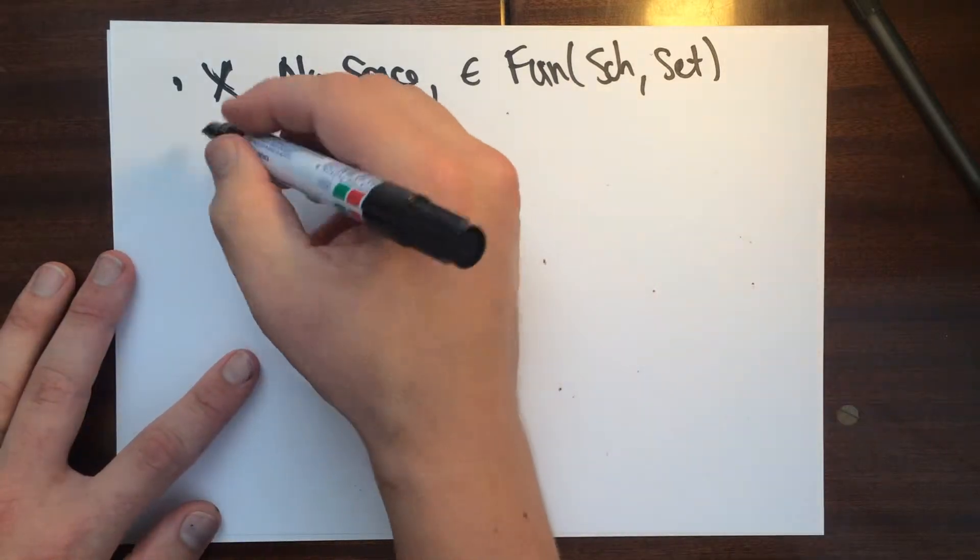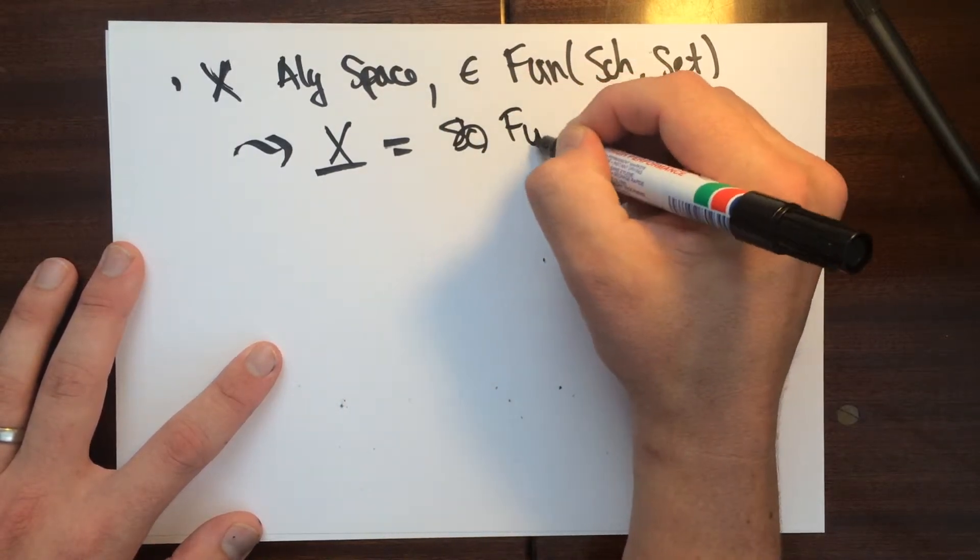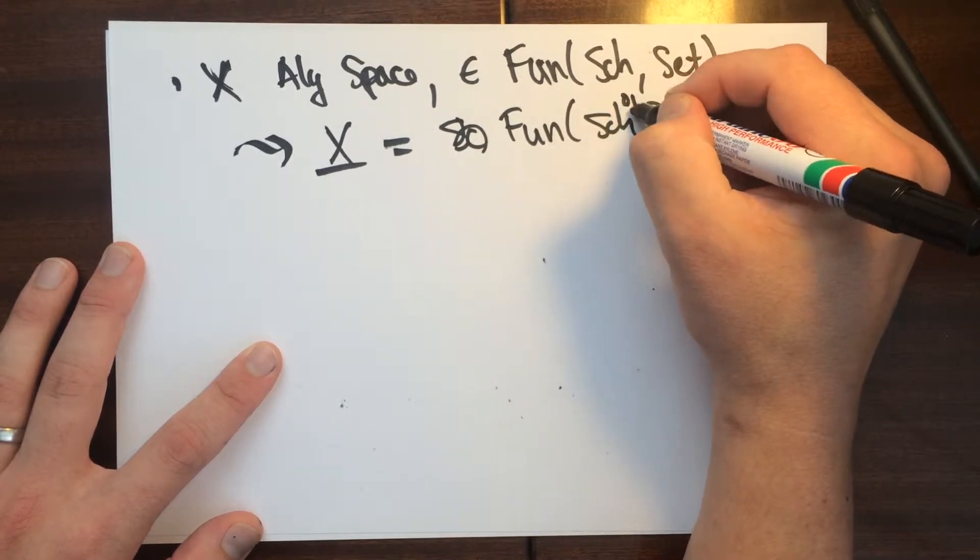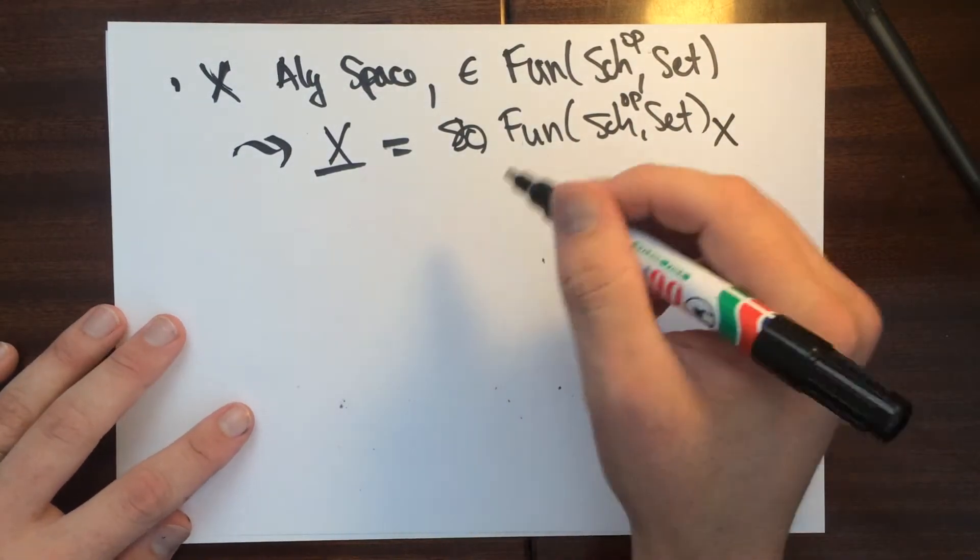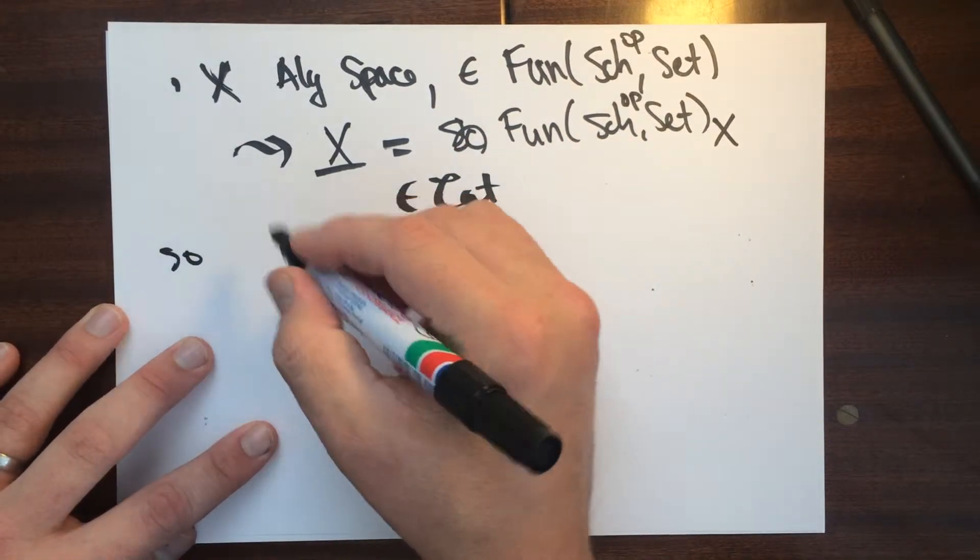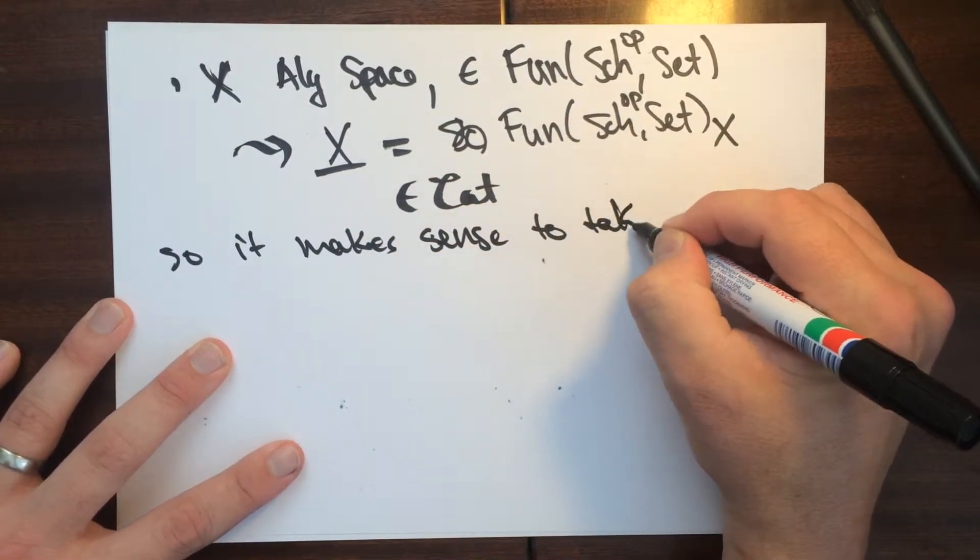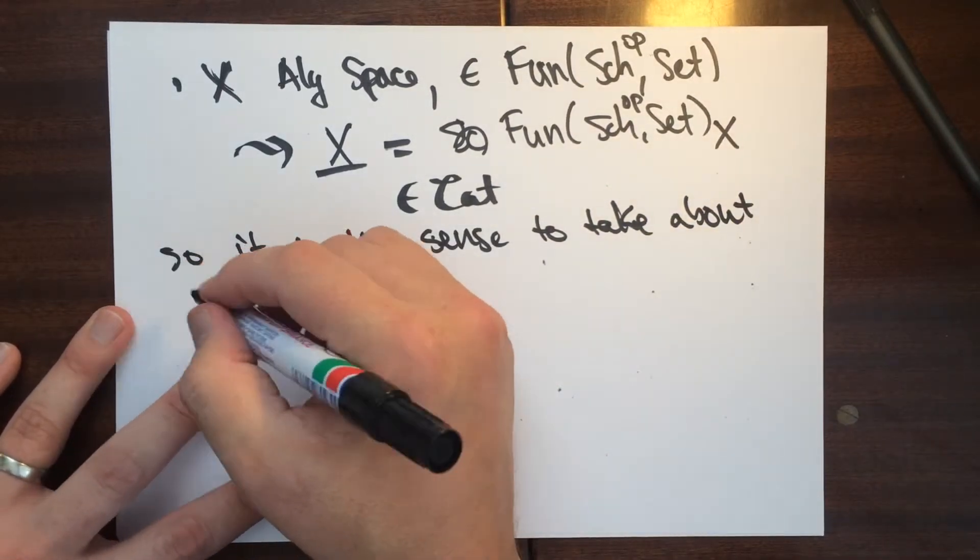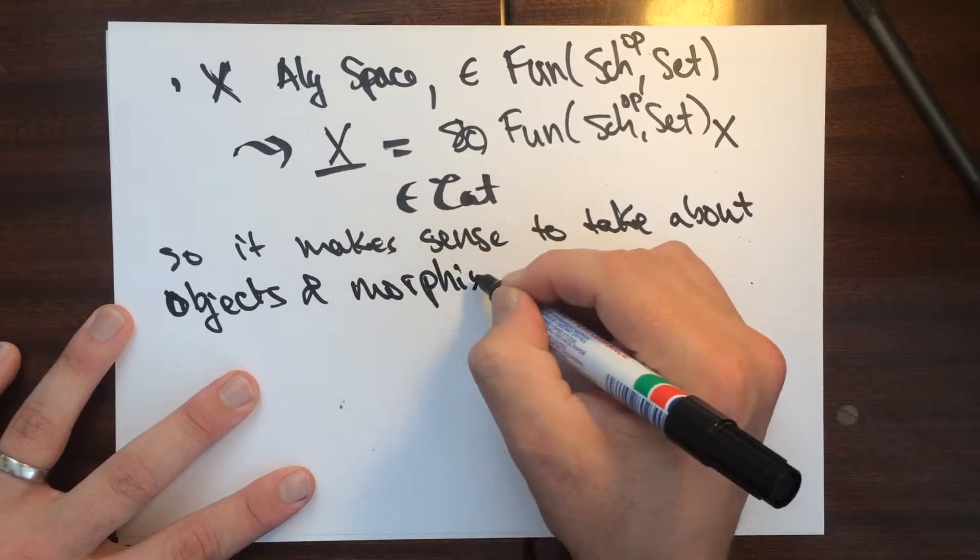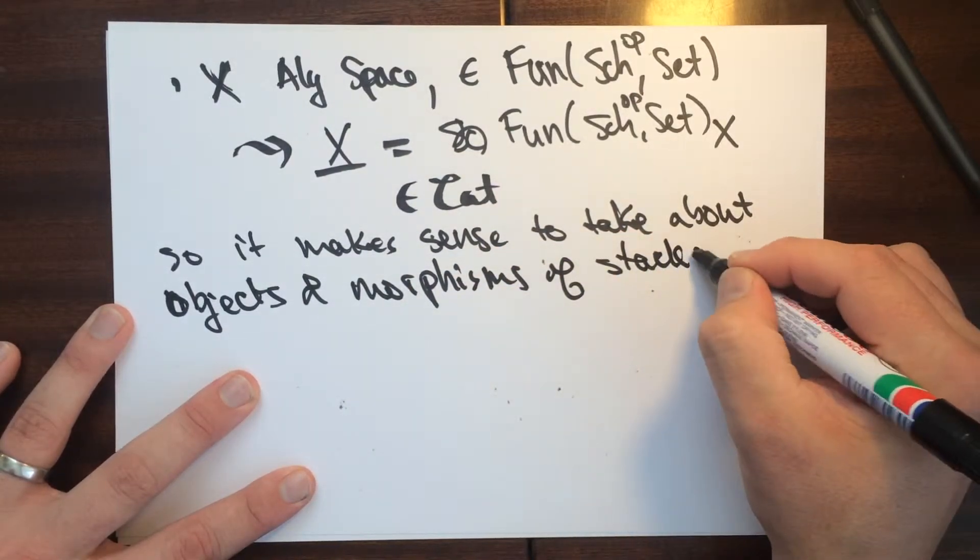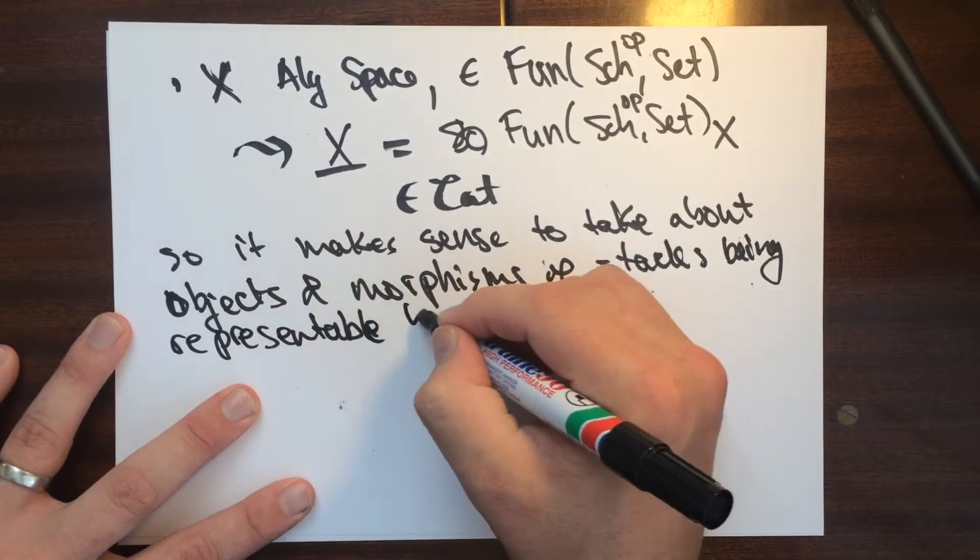So what you can do is one can look at X underline, and this could also be functors from schemes to sets, maybe we could say op, to sets over X. So we can make this over category too, and so this is a category.